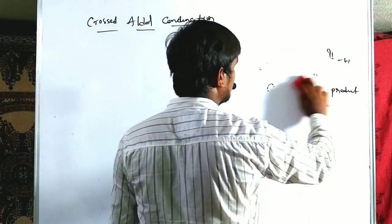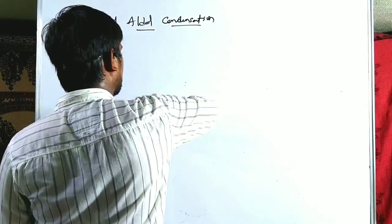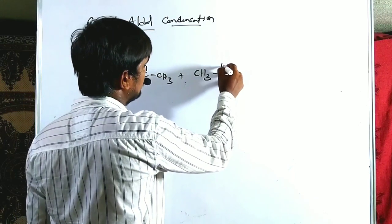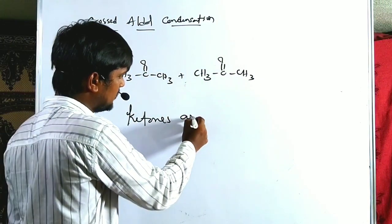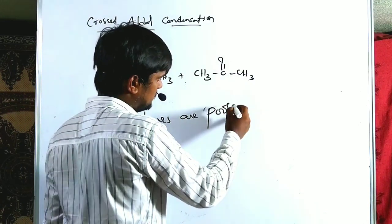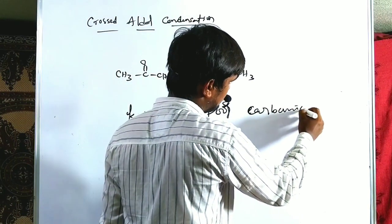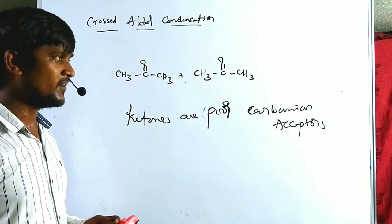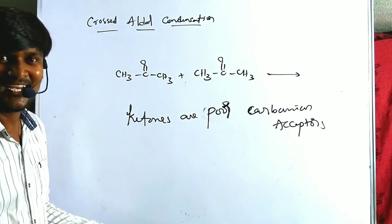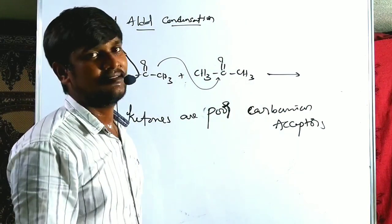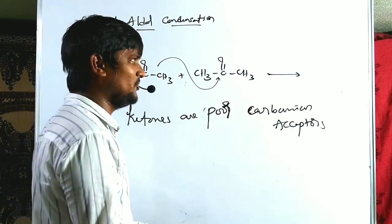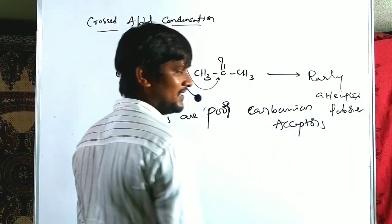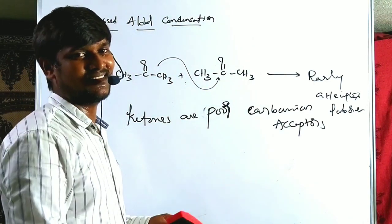Now let us discuss both are ketones. Ketones are already noted as poor carbonion acceptors. That means ketones do not readily undergo self-condensation. It is rarely attempted in laboratory methods, so there is no need to discuss this case in detail.